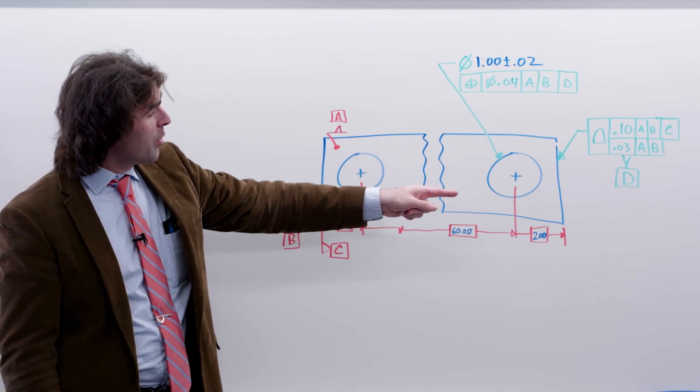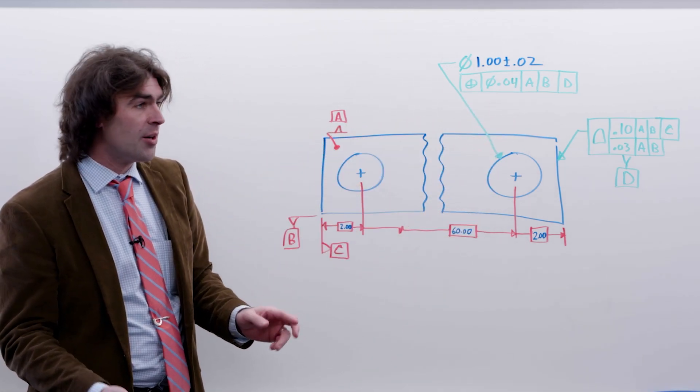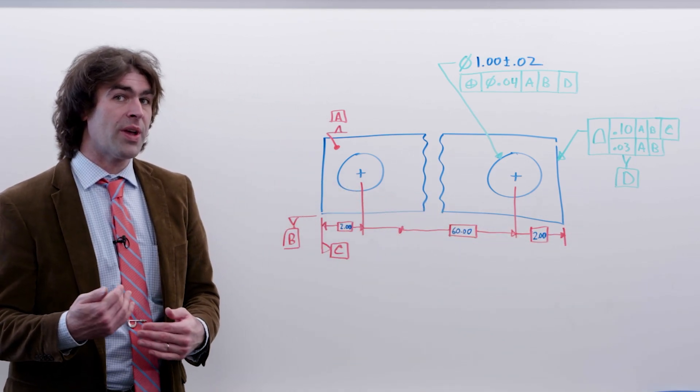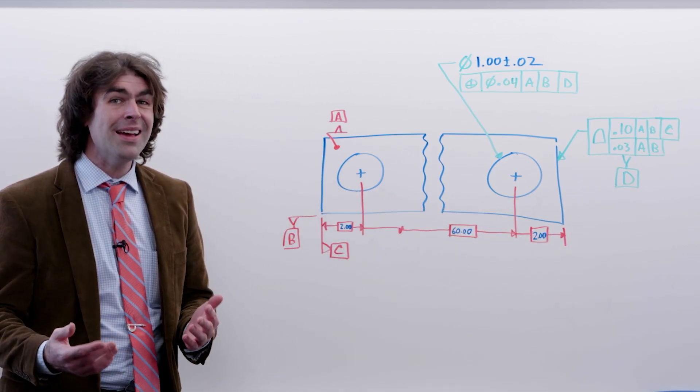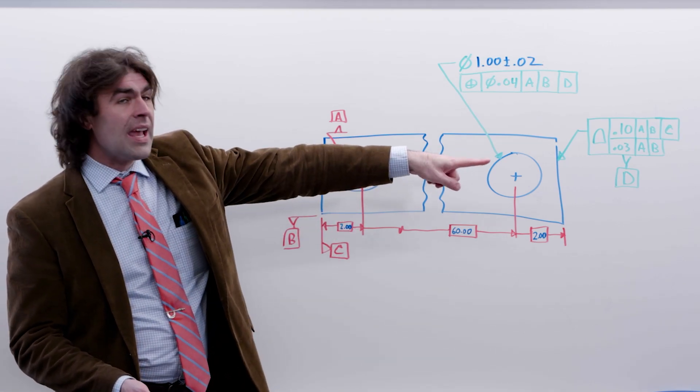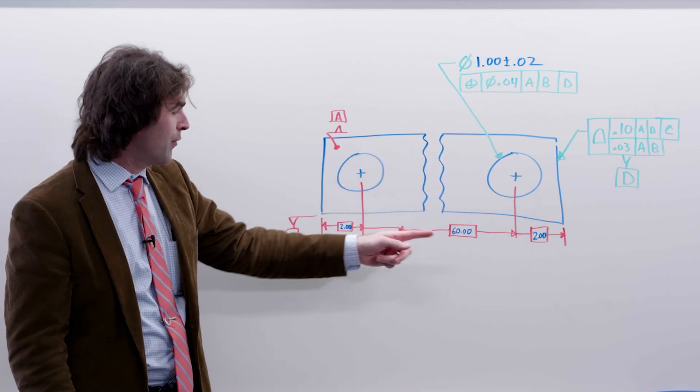So now, the hole on this side, we're going to say A, B, D. So we're indicating that there's another datum reference frame over in this corner to measure the location of that hole from, which does make things much easier. You could conceivably measure the location of that profile with a tape measure over this 64 inches.